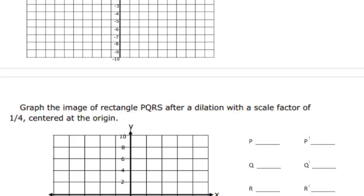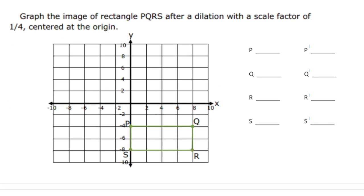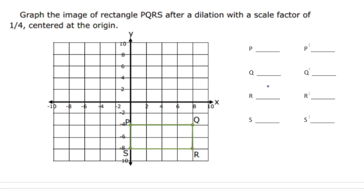Let's do one more together. It says: graph the image of the rectangle PQRS after dilation with a scale factor of one-fourth. Because the scale factor is under 1, the image is going to get smaller. So let's first list the coordinates of the original. P is (0, -4), Q is (8, -4), R is (8, -8), and S is (0, -8).